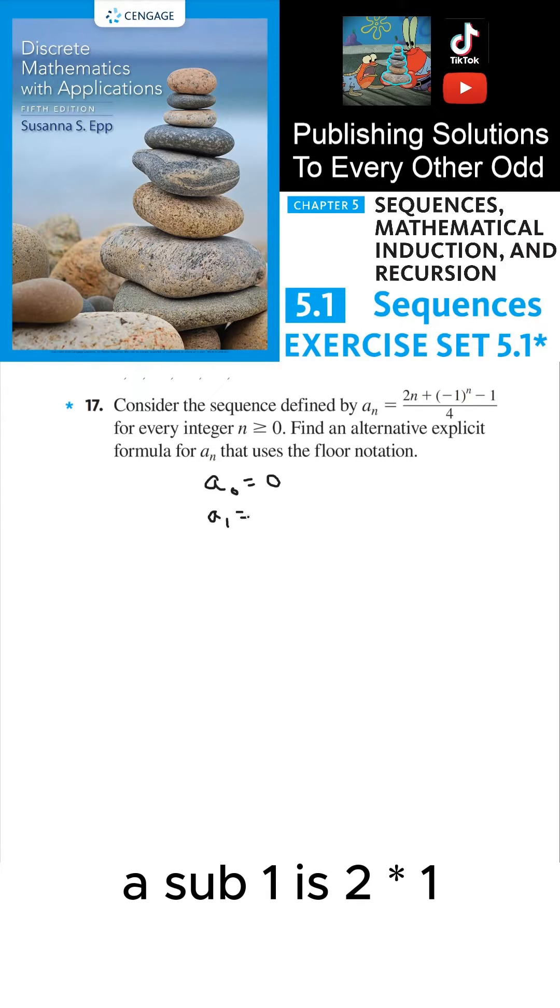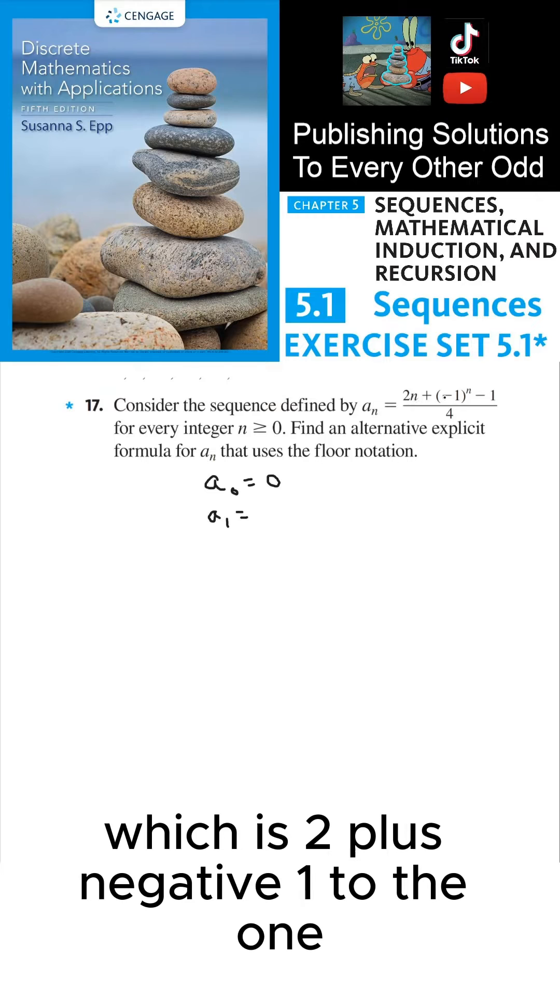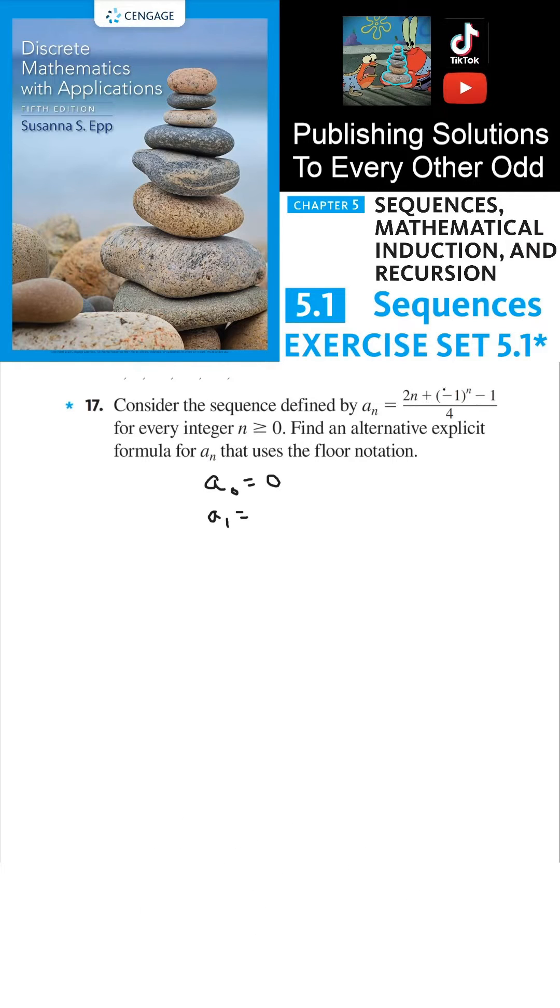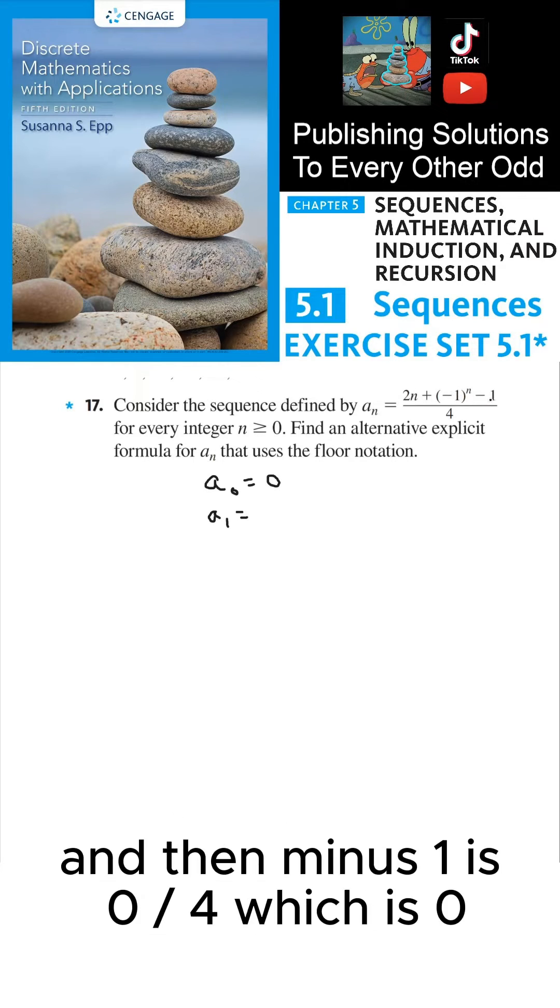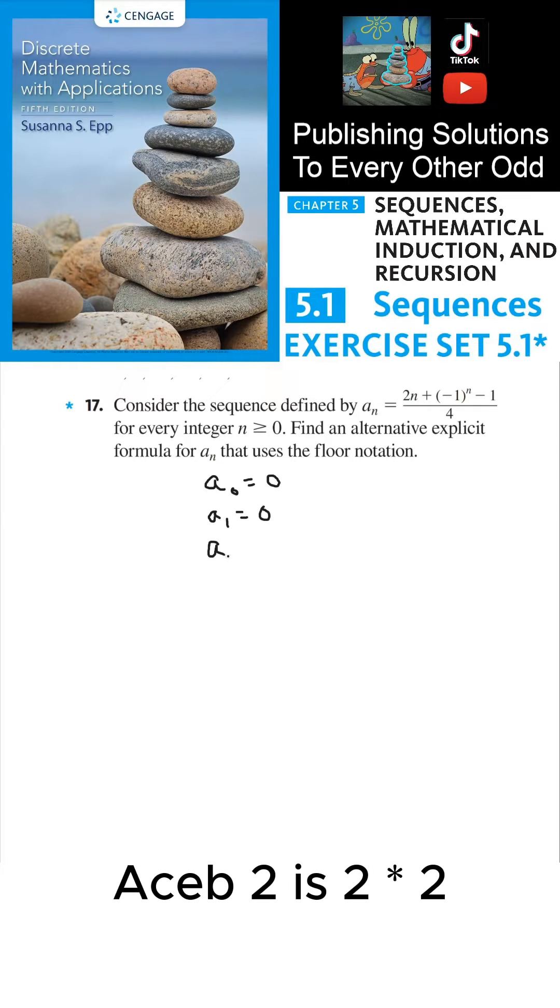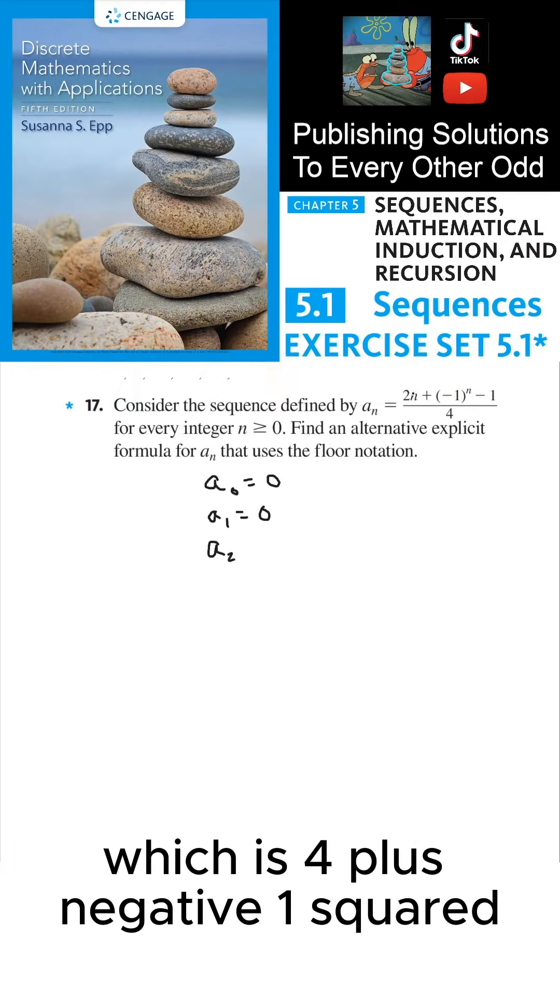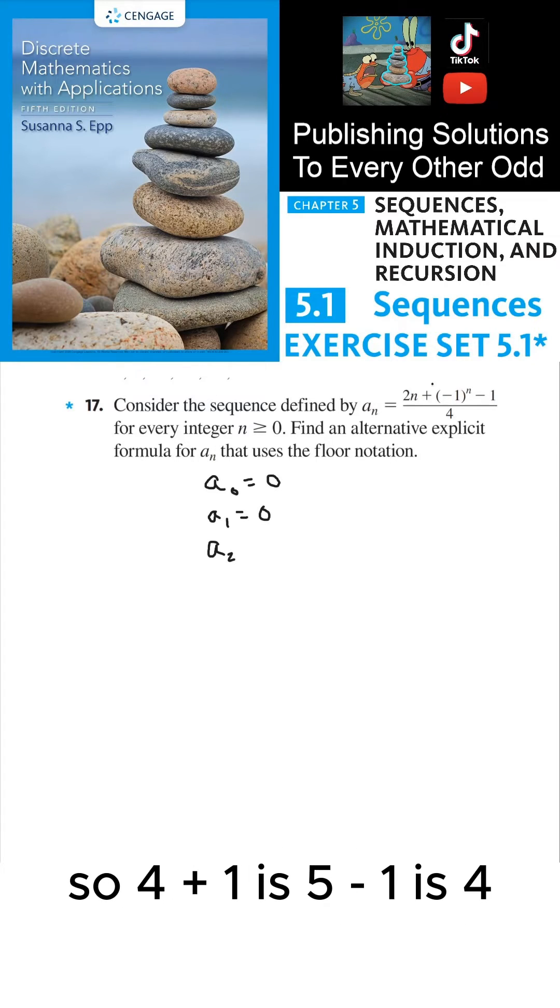a_1 is 2 times 1, which is 2, plus (-1)^1, which all together is 1, and then minus 1 is 0 divided by 4, which is 0. a_2 is 2 times 2, which is 4, plus (-1)^2, which is positive 1. So 4 plus 1 is 5, minus 1 is 4, all divided by 4 is 1.